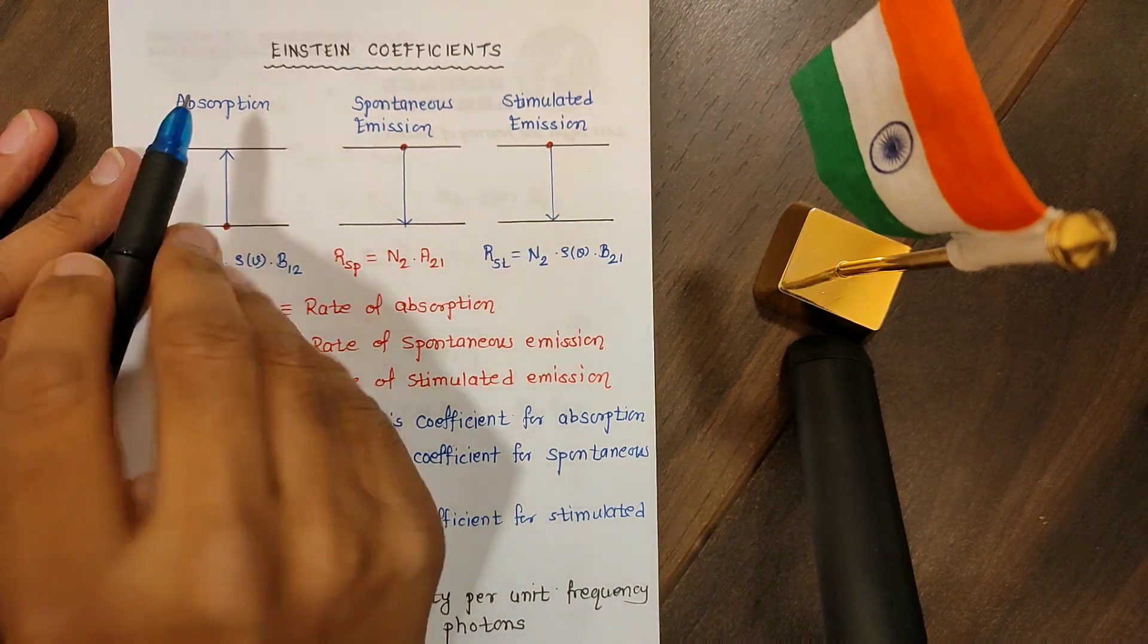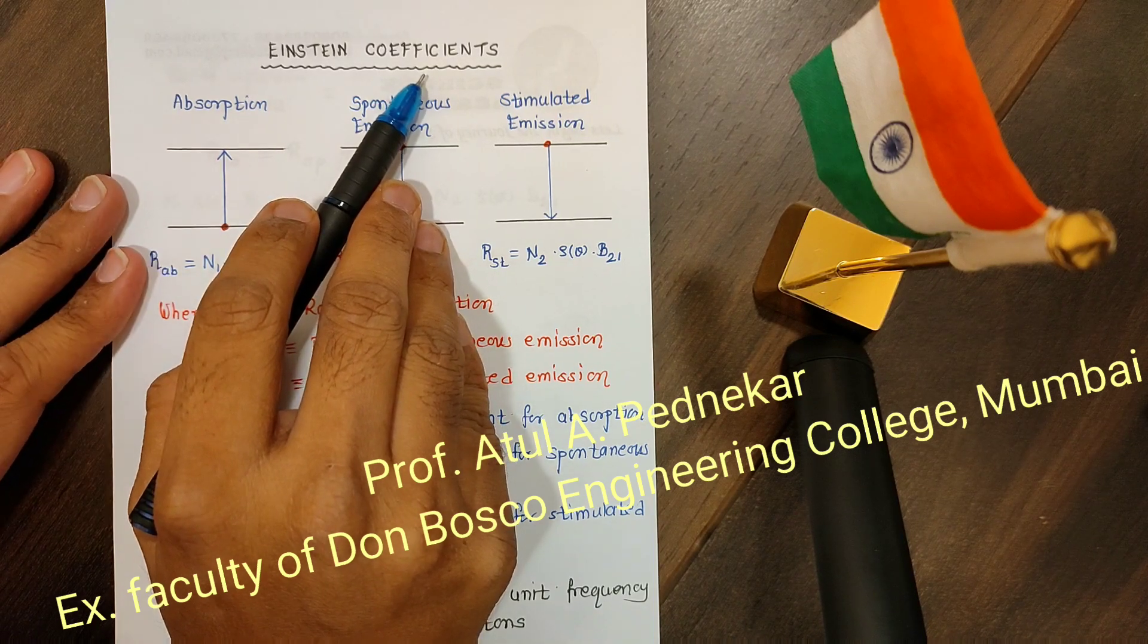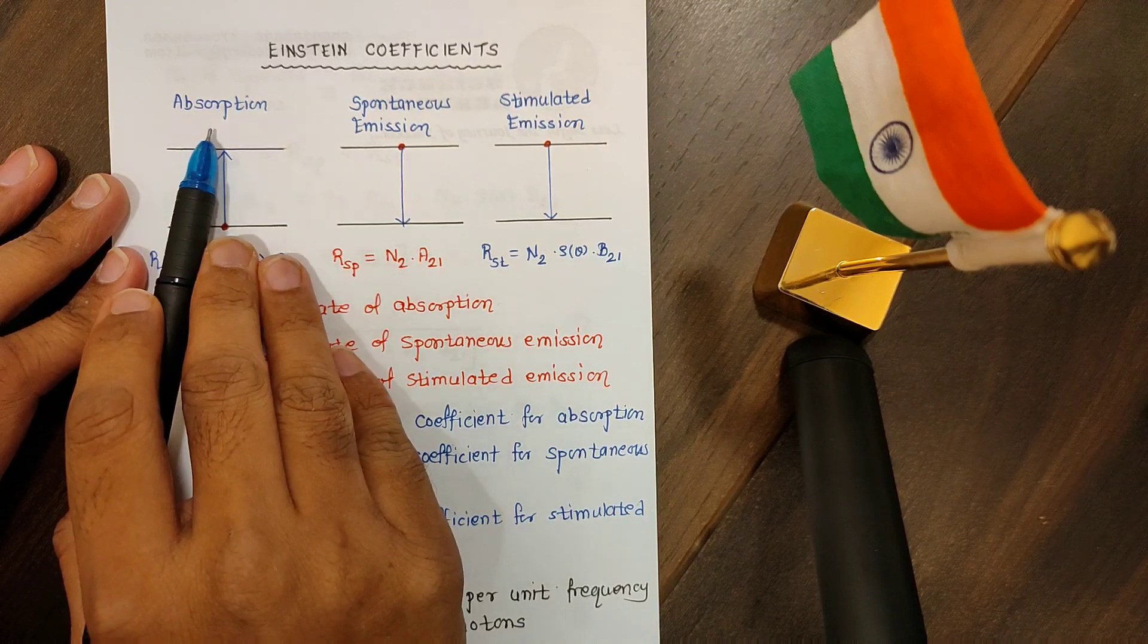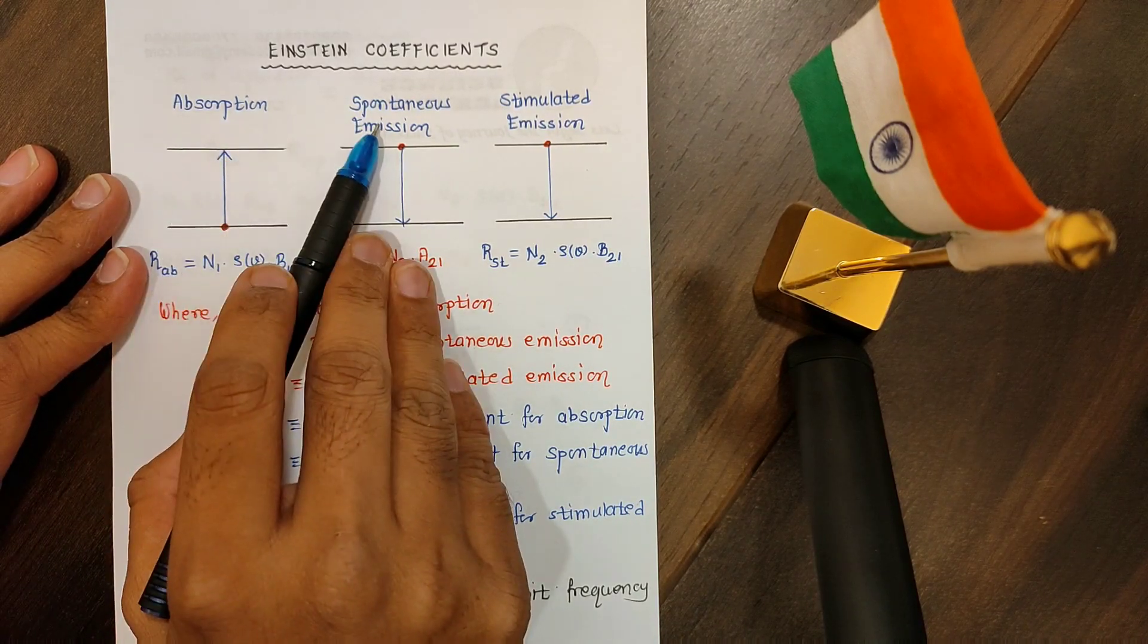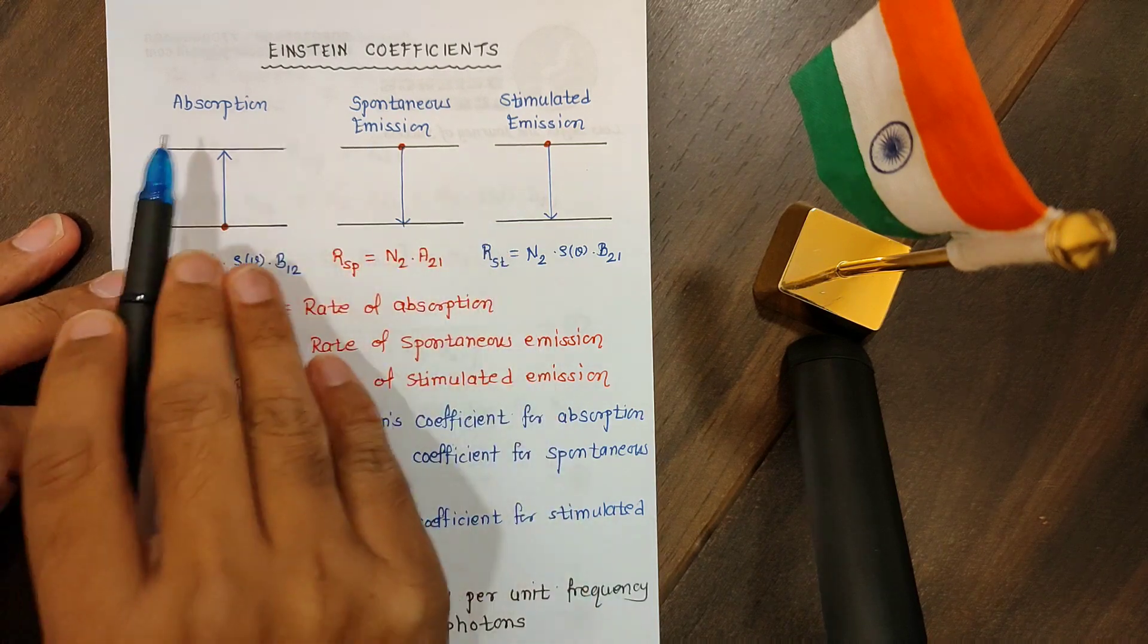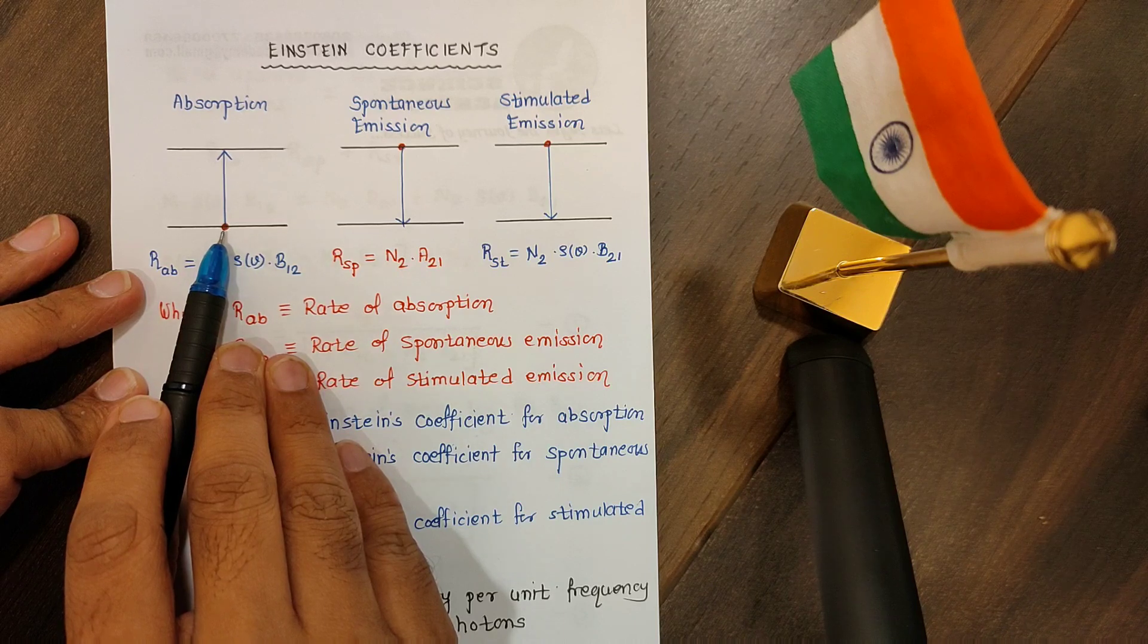Hello dear students, today we will discuss Einstein's coefficients useful in the study of laser. As we all know, there are three processes: absorption, spontaneous emission, and stimulated emission. In absorption, the electron or atom will jump from low level to the high level.